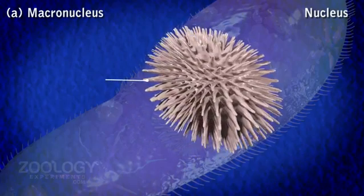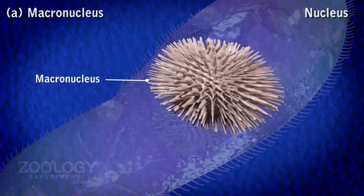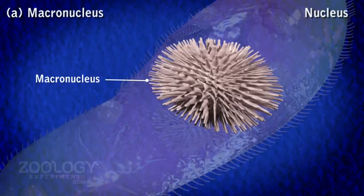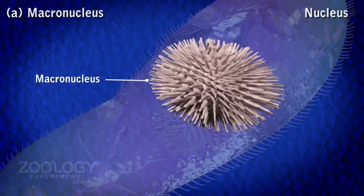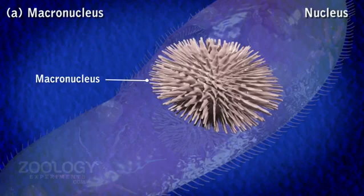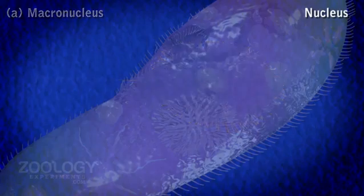It is polyploid and possesses many nucleoli and much more chromatin material, i.e. DNA. Macronucleus is the somatic or vegetative nucleus and controls the metabolic activities of the cell. It is derived from micronucleus during reproductive processes.